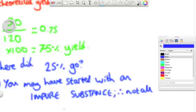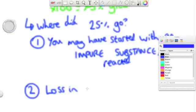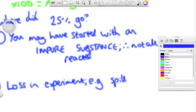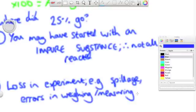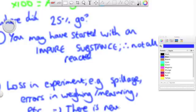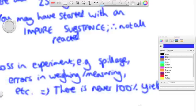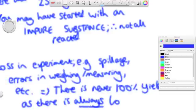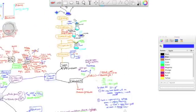But, you notice that 25% has been lost, so where did it go? It could have gone because your starting reactants were impure, and therefore your products were likely to be less, or it could be because in the experiment you might have spilt some solution, when you were measuring you might have done it very accurately, errors in transferring liquids as well.